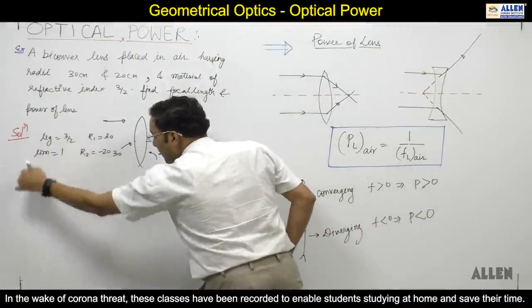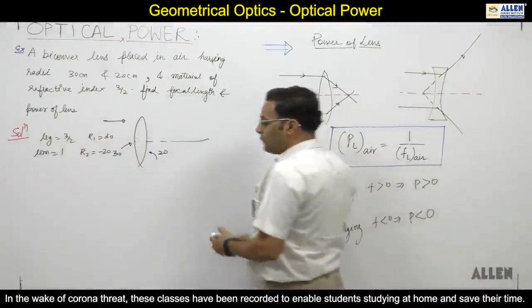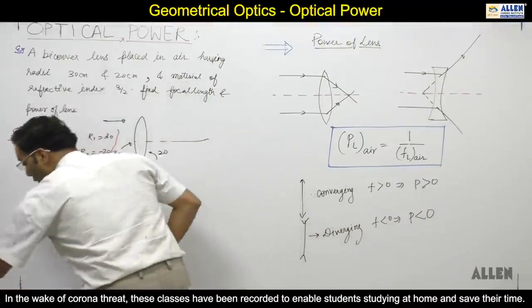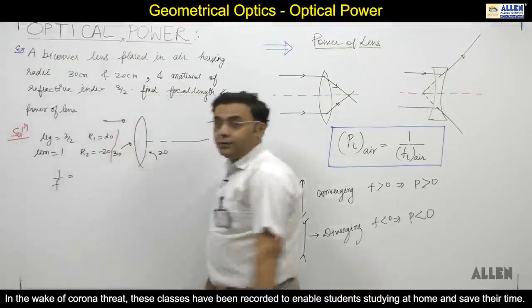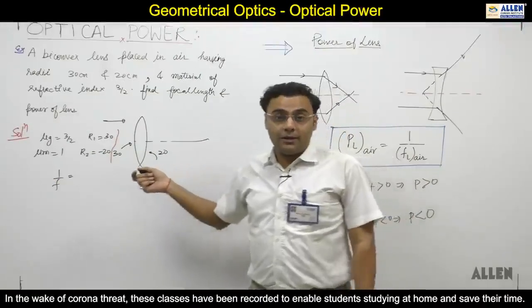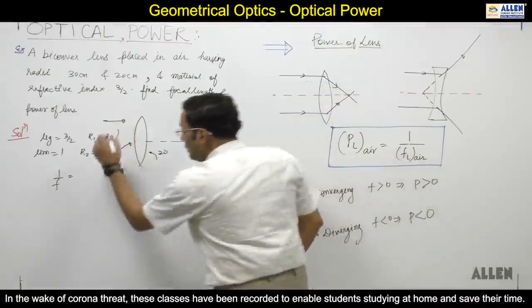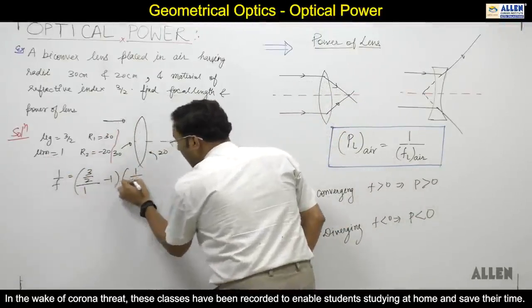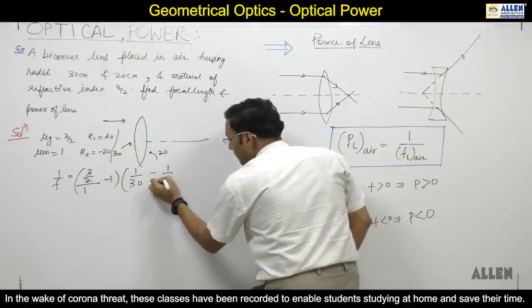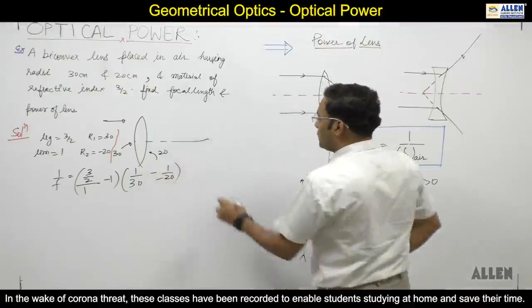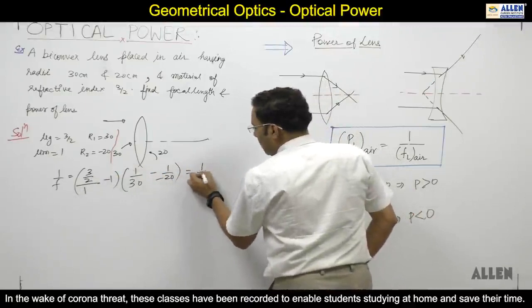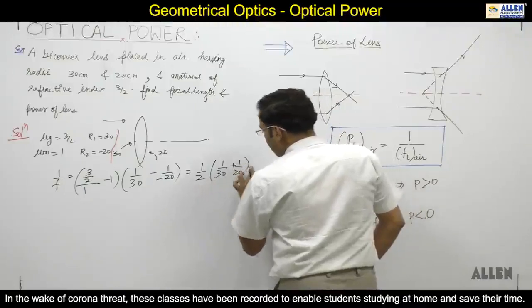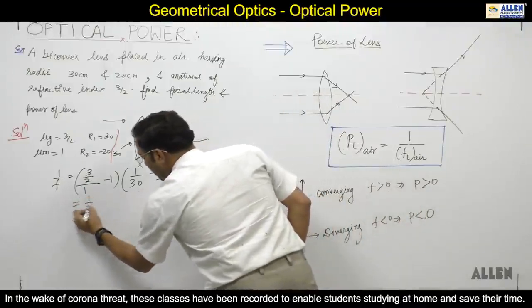The formula is lens maker formula: 1 by f equals μg by μm minus 1, times 1 by r1 minus 1 by r2. Clear? So 1 by f equals...